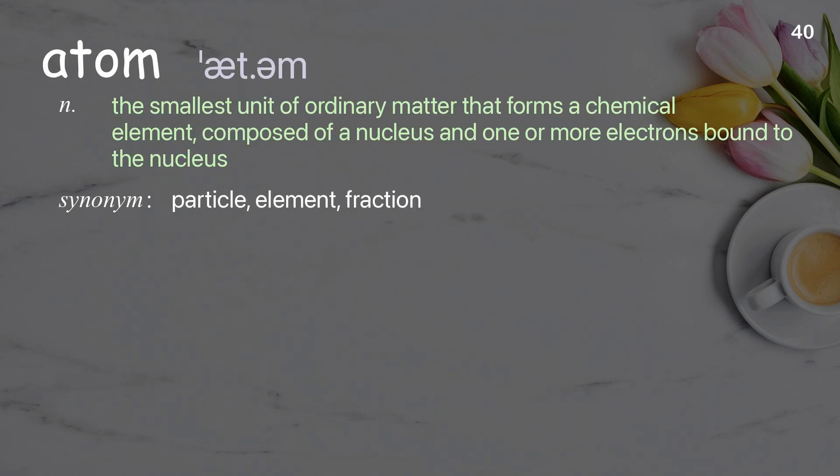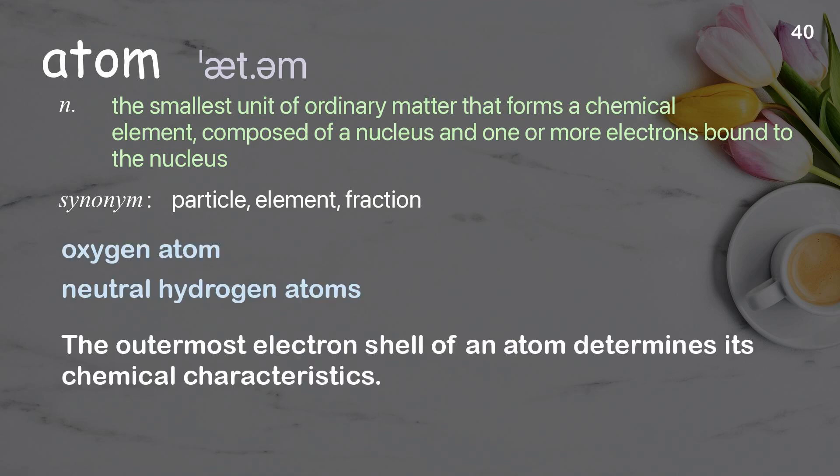Atom: the smallest unit of ordinary matter that forms a chemical element, composed of a nucleus and one or more electrons bound to the nucleus. The outermost electron shell of an atom determines its chemical characteristics.